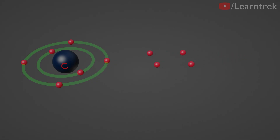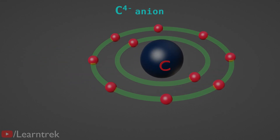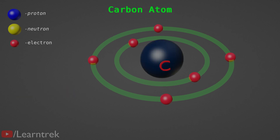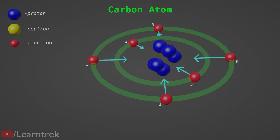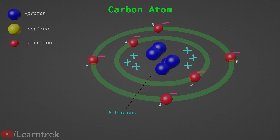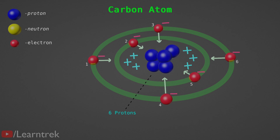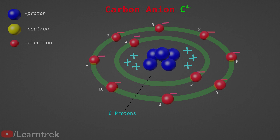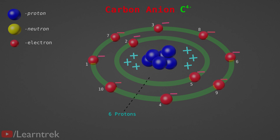Carbon could gain 4 electrons to become a C4⁻ ion, but it would be difficult for the small nucleus with 6 protons to hold 10 electrons. The 6 protons in the nucleus hold 6 electrons due to attraction between positively charged protons and negatively charged electrons. Positive charge on 6 protons balances the negative charge on 6 electrons, but when 4 extra electrons are added, this balance is disturbed, making it very difficult for 6 protons to hold 10 electrons.